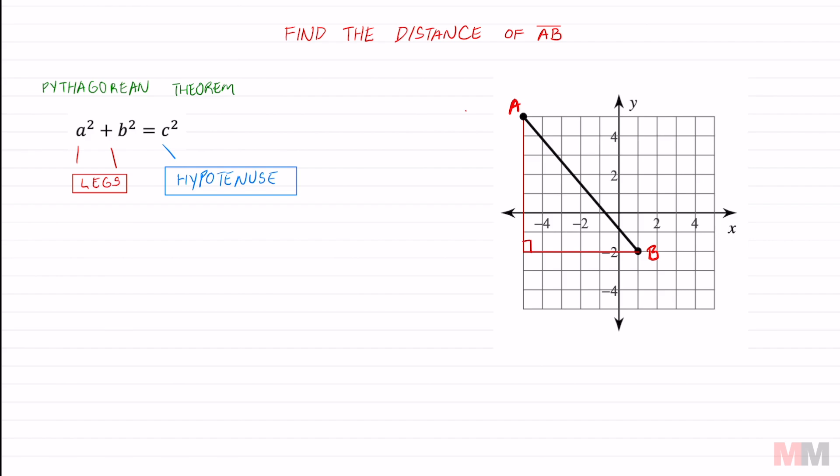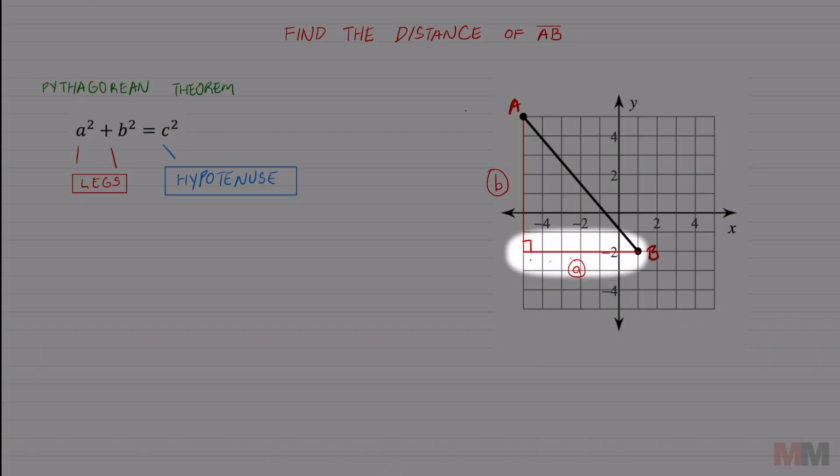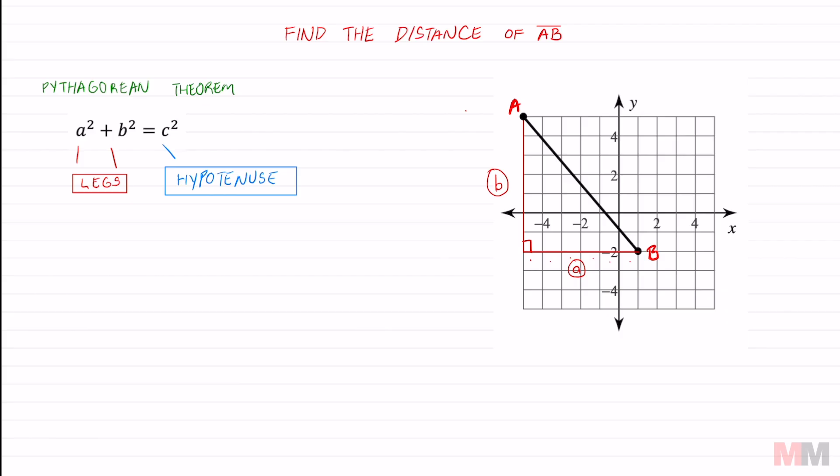I need to find out my legs first. I need to find the distance of my legs. Let's call this one A and let's call this one B. And you can simply do that by counting the distance along the x-axis. One, two, three, four, five, six, seven. We know that A is six, one of my legs.